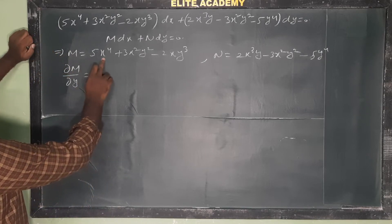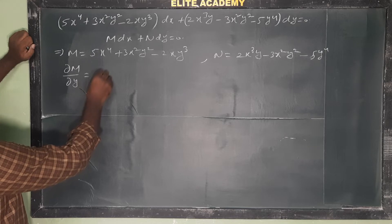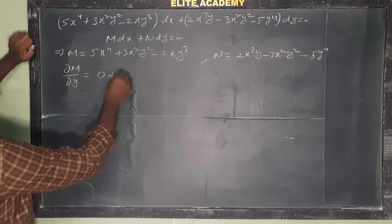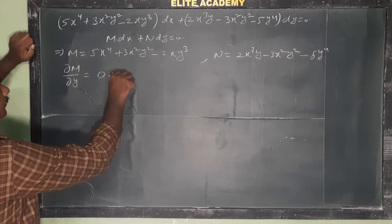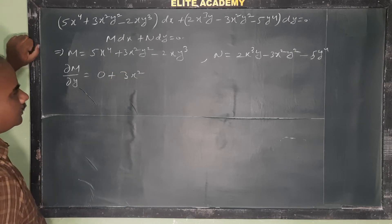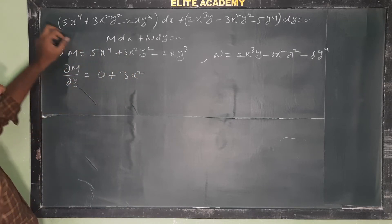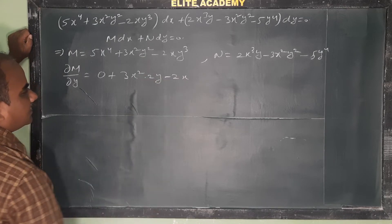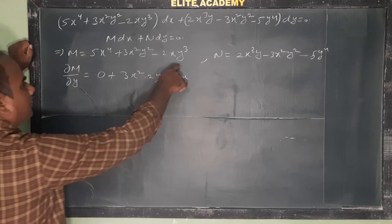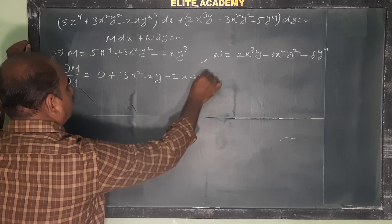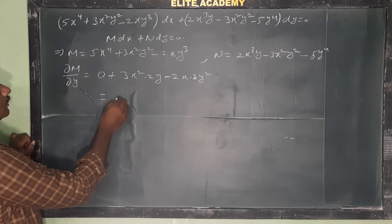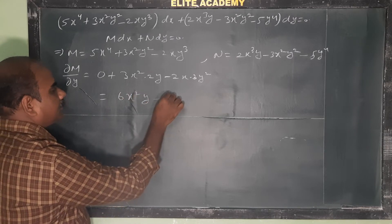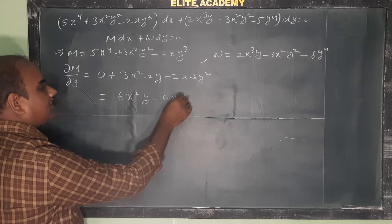5x⁴ is constant with respect to y, so its derivative is 0. For 3x²y², 3x² is constant, so the derivative of y² is 2y. For −2xy³, −2x is constant, so the derivative of y³ is 3y². Therefore ∂M/∂y = 6x²y − 6xy².